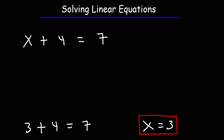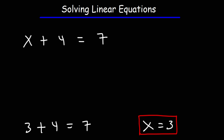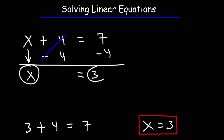Now let's talk about a step-by-step process to get this answer. In this equation, x is added to 4, and that equals 7. To solve the equation, you want to get the x variable by itself on one side. The only way to do that is to get rid of the 4 by performing the opposite operation. The opposite of addition is subtraction, so we subtract both sides by 4. Whatever you do to the left side, you must also do to the right side. Positive 4 plus negative 4 adds up to 0, so they cancel. Bringing down the x, we have 7 minus 4, which is 3. So x is equal to 3.